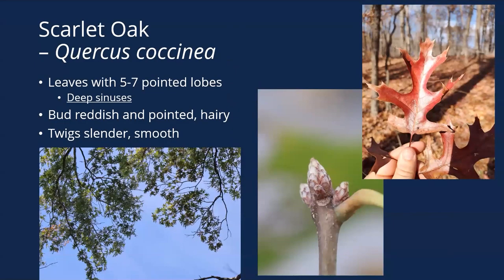The leaves look a lot like a red oak — five to seven pointed lobes with really, really deep sinuses. The buds are reddish and pointed, fairly large and hairy. The twigs are slender and smooth. It doesn't always jump out as only a scarlet oak — it kind of looks like a red oak, and of course it grows in much drier sites.